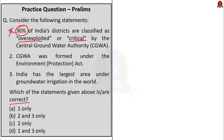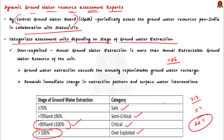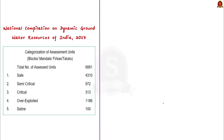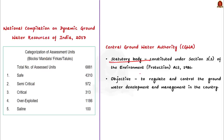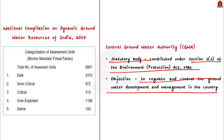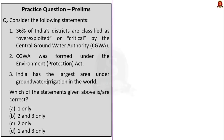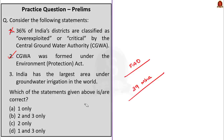The second statement — CGWA was formed under the Environment Protection Act — is correct. CGWA is a statutory body established under Section 33 of the Environment Protection Act 1986, with the main objective to regulate and control groundwater development and management. The third statement — India has the largest area under groundwater irrigation in the world — is also correct, approximately 39 million hectares according to a FAO research paper. So the answer is B: 2 and 3 only.